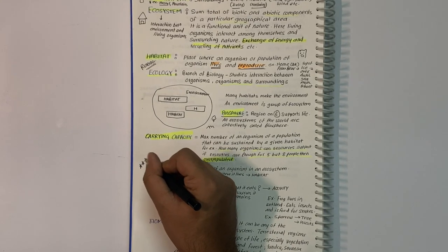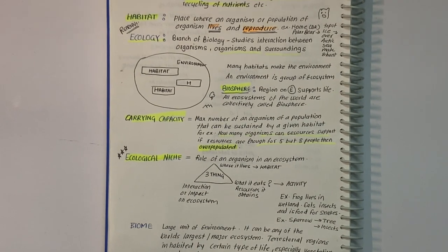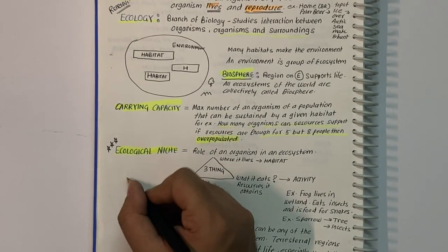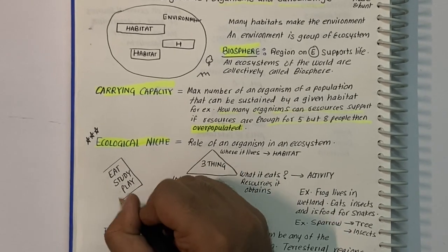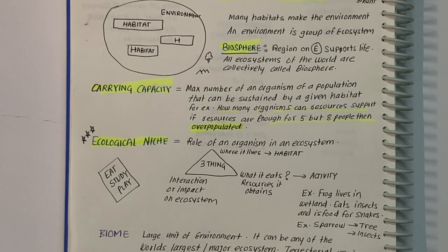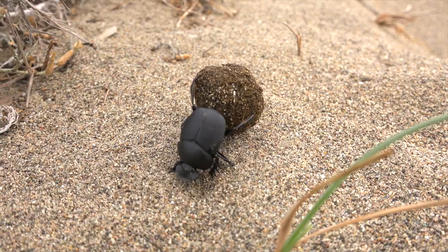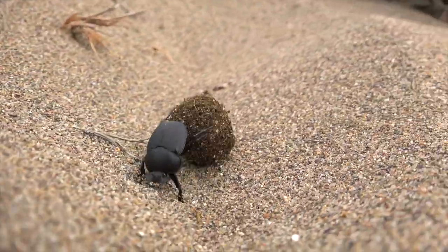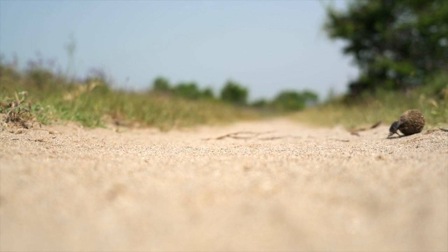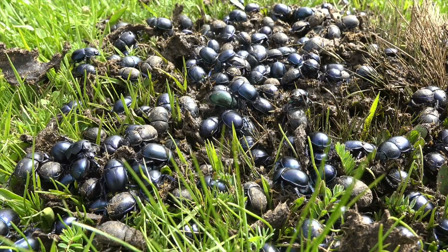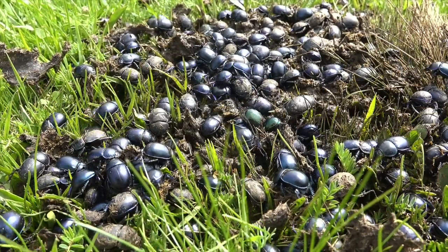Ecological niche is the role of an organism in an ecosystem where it lives. For example, a student's functional role is to eat, play, and study; a policeman's role is to maintain law and order. A relatable example is the dung beetle — it eats dung, makes a ball out of it, females lay eggs on that ball, and by doing so they provide nutrition to the soil. This is the functional role of a dung beetle.